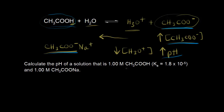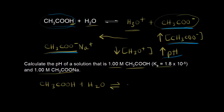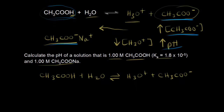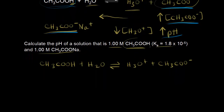Calculate the pH of a solution that has 1.00 molar acetic acid — and there's the Ka for acetic acid — and 1.00 molar sodium acetate. We're just going to start by rewriting our acid-base reaction. So we have acetic acid plus water in equilibrium with our products H3O plus and acetate, CH3COO minus. Let's just for a second pretend like we have only acetic acid. We started with our initial concentration, and we put 1.00 molar for the concentration of acetic acid.